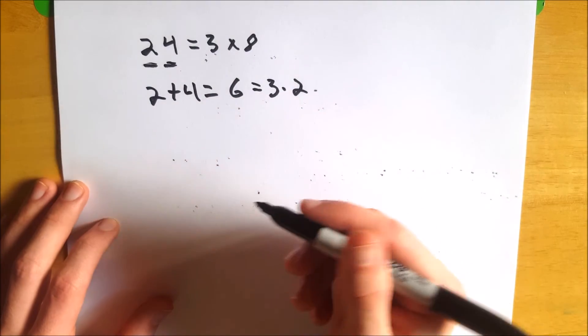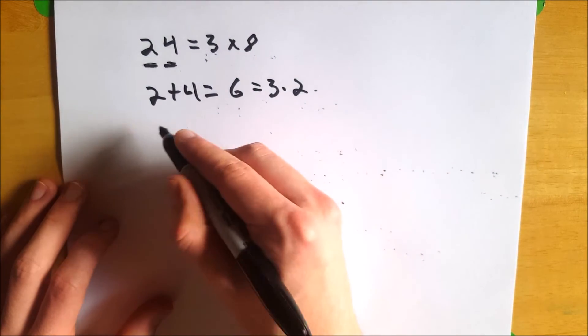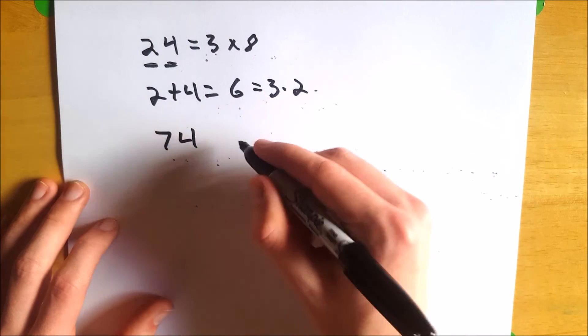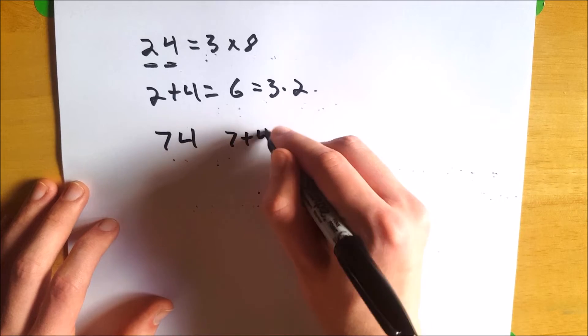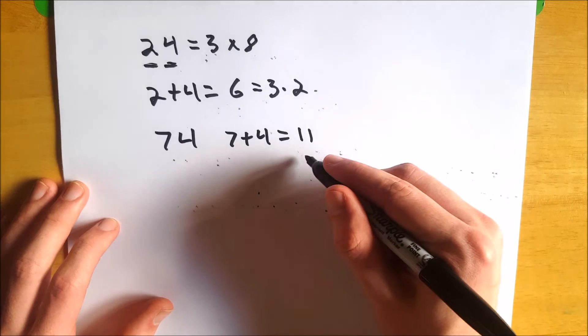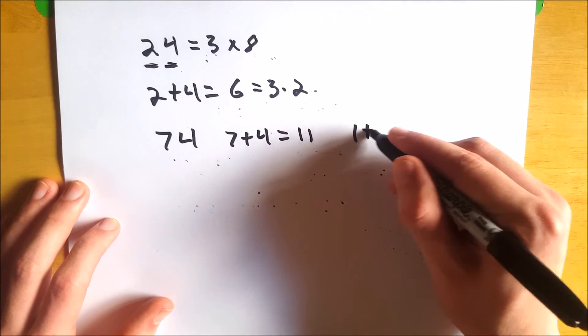Take a look at another one, one that is not divisible by 3. So how about 74? Add up the digits. 7 plus 4 equals 11. When you've got a two-digit number, you can just add the digits up again. So 1 plus 1 equals 2.